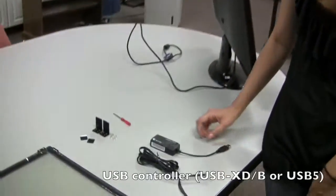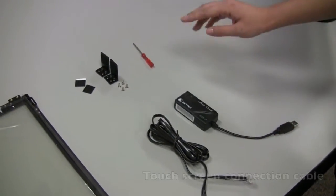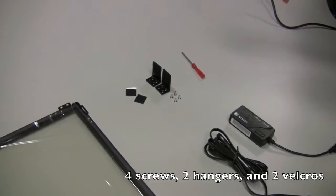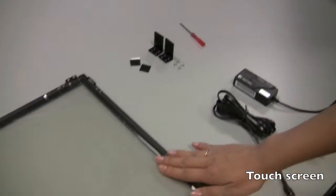First off, let's go through what comes in your package. We're going to get a USB controller, a connection cable, and some accessories, which include four screws, two hangers, and two velcros, and your touch screen of course.